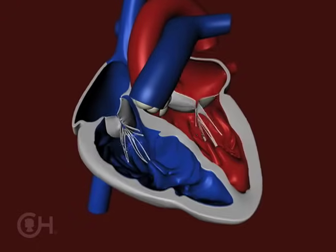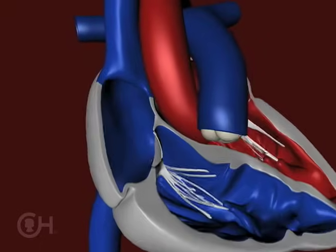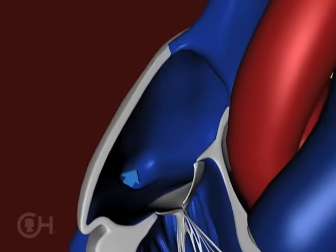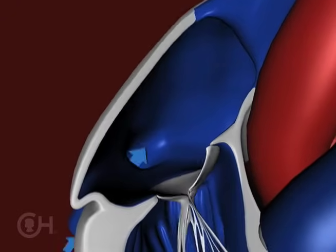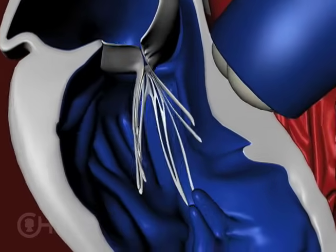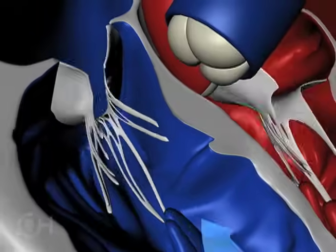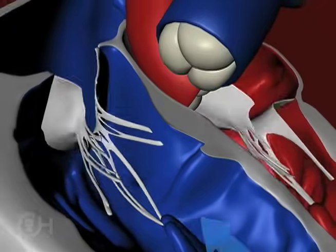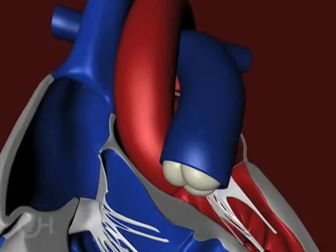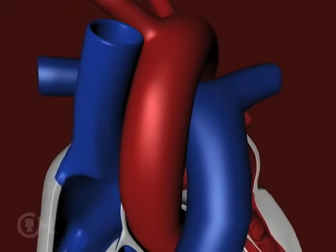A red blood cell will come from either the superior vena cava or the inferior vena cava and enter into the right atrium. The blood then flows across the tricuspid valve to the right ventricle. The right ventricle then squeezes and ejects that blood cell into a vessel called the pulmonary artery, which splits into two vessels, each going to the lungs.